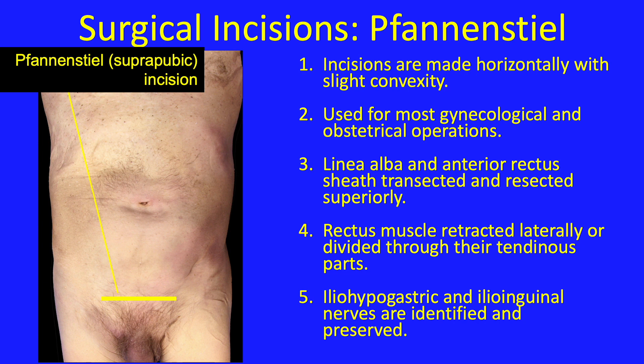The Pfannenstiel incisions are made horizontally with slight convexity. They are used for most gynecological and obstetrical operations — indeed, they are the most common method for performing cesarean sections today. The linea alba and anterior rectus sheath are transected and resected superiorly. The rectus muscle is retracted laterally or divided through their tendinous parts. The iliohypogastric and ilioinguinal nerves are identified and preserved.